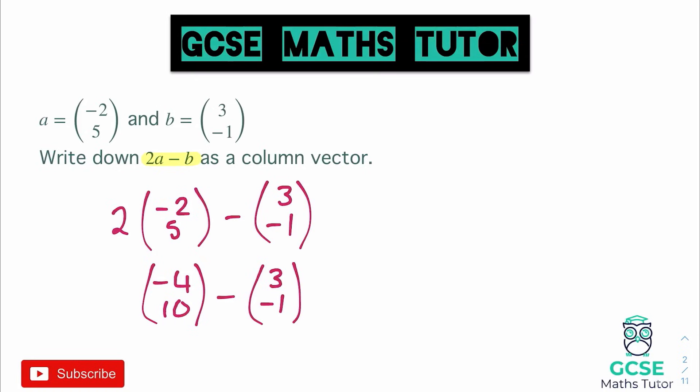Dealing with the top numbers: we've got minus 4, and we're going to take away 3, so minus 4 take away 3 leaves us with minus 7. On the bottom, we've got 10, and we're taking away that negative 1 — taking away a negative is going to add 1, so we do 10 add 1, which is 11. There is our final vector: minus 7 over 11, written as a column vector.